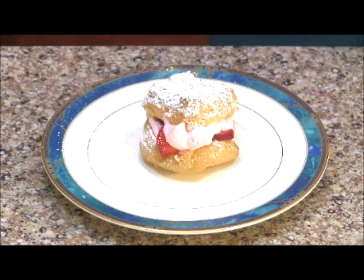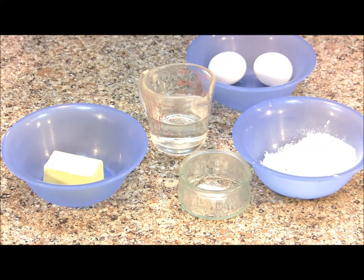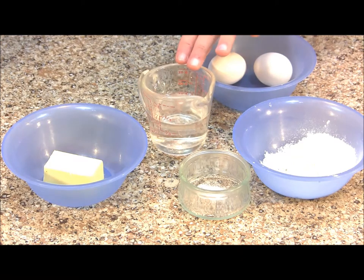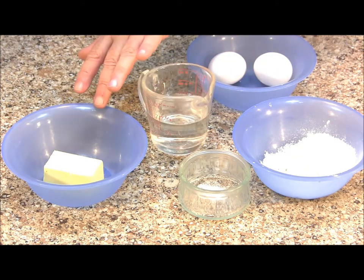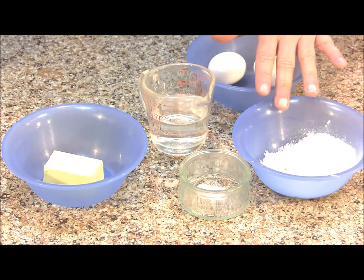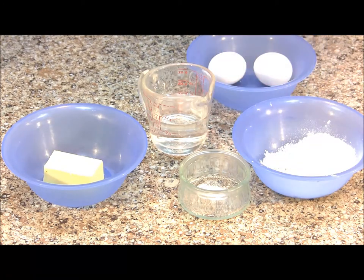Let's go ahead and get started. To make the dough for our cream puffs you're going to need a half a cup of water, a quarter cup of butter, half a cup of flour, a quarter teaspoon of salt and two eggs.